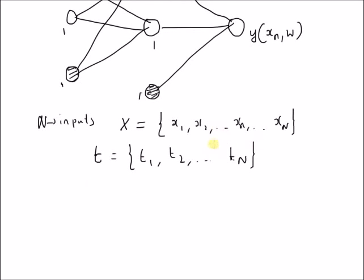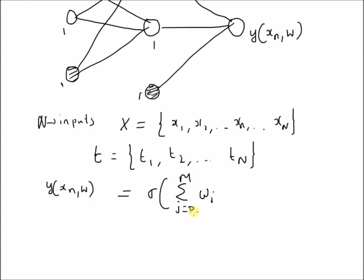Given these values, our goal is to find the optimal weights. In terms of neural network training, we want to find the optimal weights W. The output y of xn comma w, where y is also a scalar, is equal to the sigmoid function of the summation j equal to 0 to M of w_j — where j equal to 0 corresponds to the bias — into the activation function h of the summation i equal to 0 to D of w_ji times x_i, where x_i is the i-th component of the n-th input vector. This is the output of the two-layer artificial neural network.